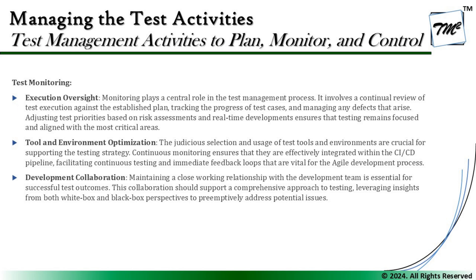When it comes to monitoring, three major factors to look at are: execution oversight, tool and environment optimization, and development collaboration. Execution oversight means monitoring plays a central role in the test management process — it involves a continual review of test execution against the established plan, tracking the progress of test cases and managing any defects that arise. Adjusting test priorities based on risk assessments and real-time development ensures that testing remains focused and aligned with the most critical areas.